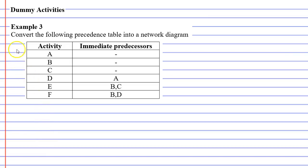In this video, we're going to complete example three. We're going to convert the following precedence table into a network diagram.